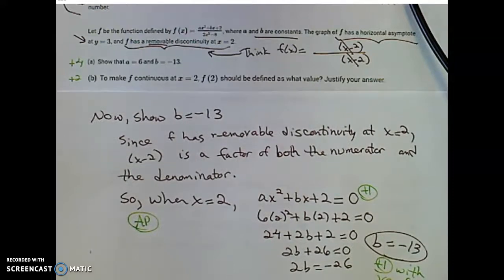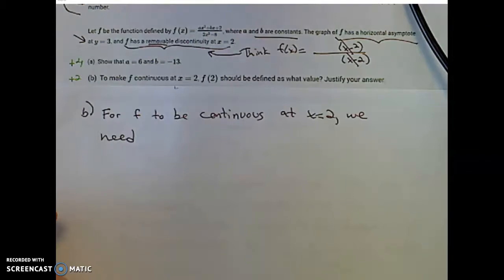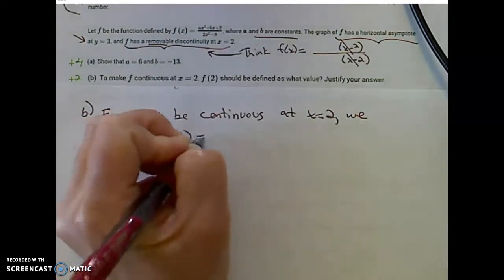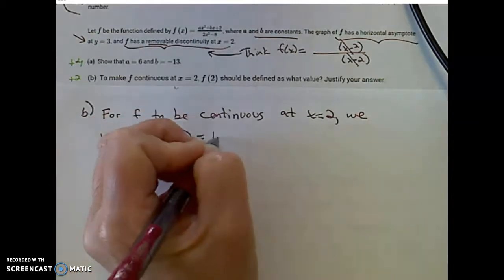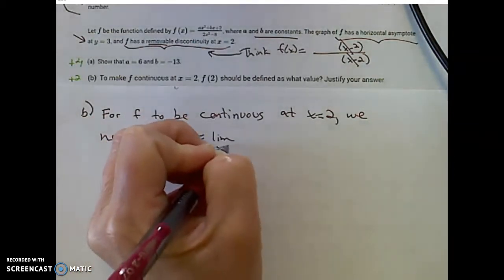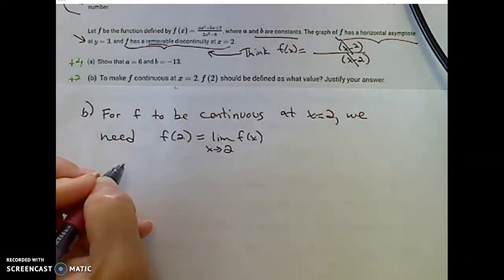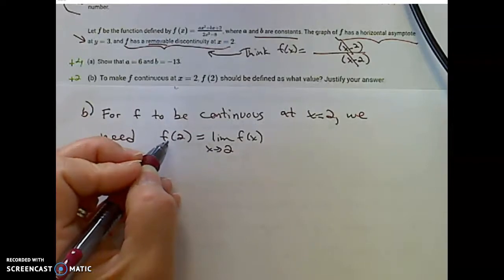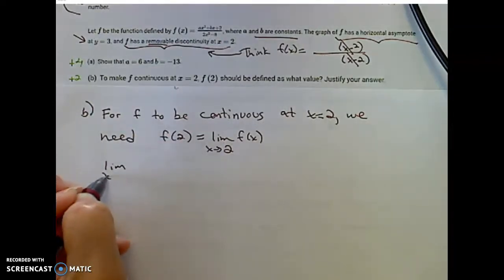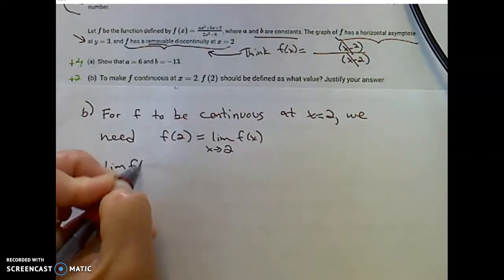To make f continuous at x equals 2, f of 2 should be defined as what value? Justify your answer for two points for this part. Here's my calculus thinking, my justification. For f to be continuous at x equals 2, we need f of 2, the function value at 2, to equal the limit as x approaches 2 of that function. We need to find this. What is the limit as x approaches 2 of that function?